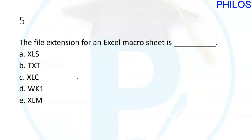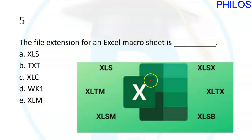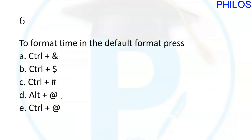Question five: the file extension for an Excel macro sheet. The answer is E — it's the Excel macro sheet extension. Question six: to format time in the default format, press Control plus @ (at sign).